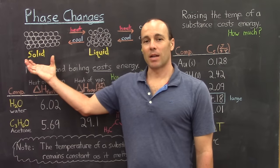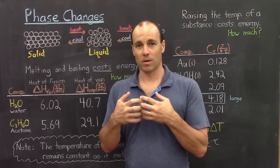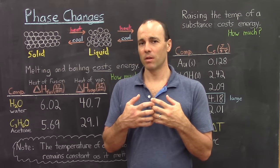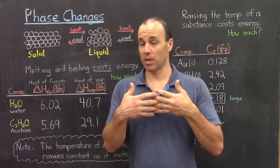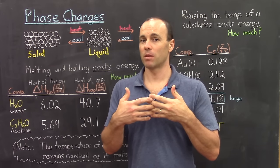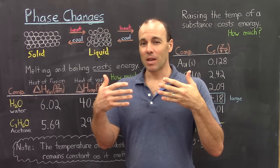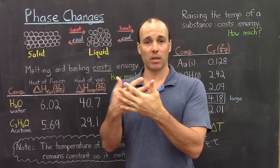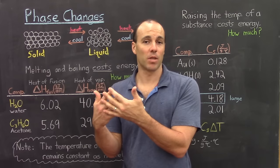Solids are held together through locking intermolecular forces — those particles are locked together. If you want to convert a solid to a liquid, first you're going to have to raise the temperature of that solid up to the melting temperature, and that's going to cost some energy. But once you get the temperature of the solid up to the melting temperature, to actually melt it requires those intermolecular interactions to be broken, so that the particles can flow past one another, and that requires an extra amount of energy.